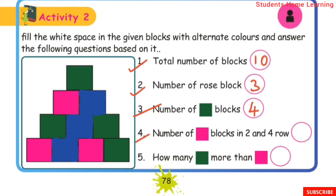Number of green blocks: there are 4 green blocks. Number of rose blocks in the 2nd and 4th rows: the 2nd and 4th rows have rose blocks, totaling 8 positions. How many more green blocks than rose blocks? Green blocks: 4, rose blocks: 3 — difference is 1.